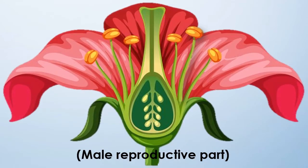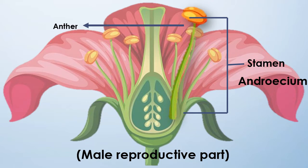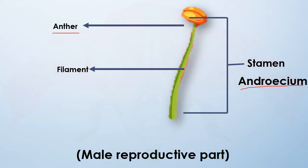Now let's look at the male reproductive parts of the flower. The male reproductive whorl is called androecium. It consists of the anther — the top portion — and the filament — the stalk that supports the anther.